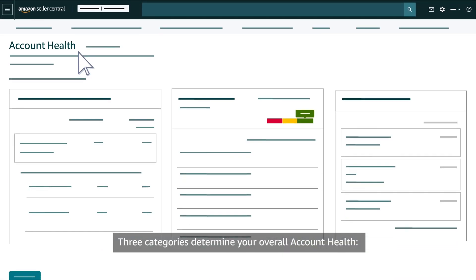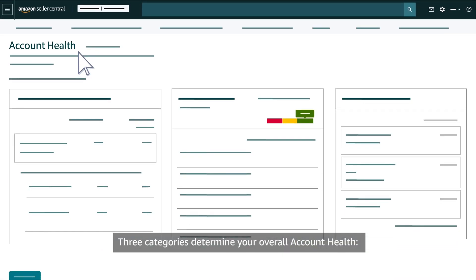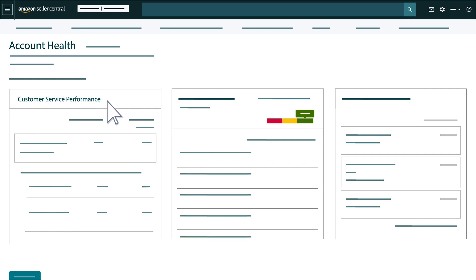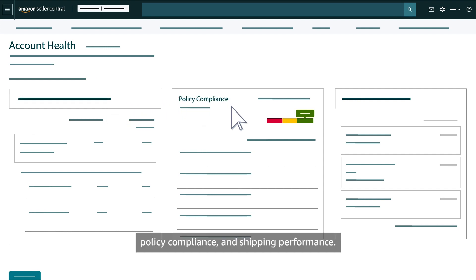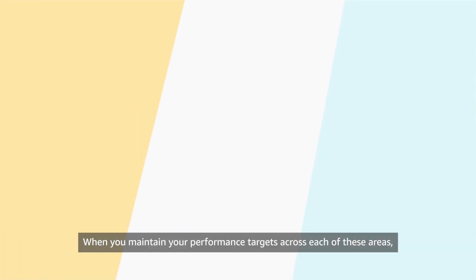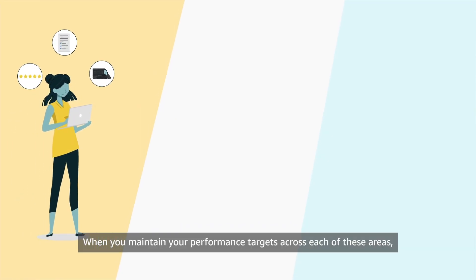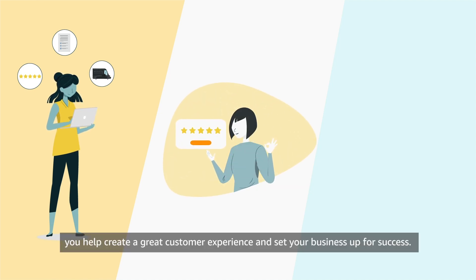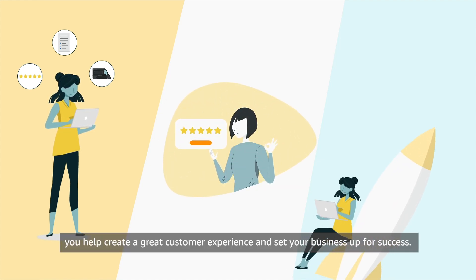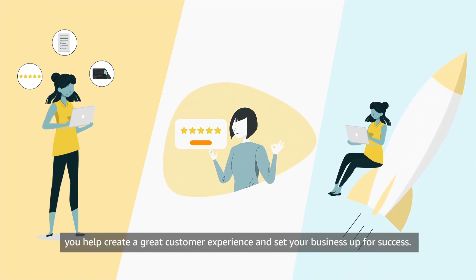Three categories determine your overall account health: Customer Service Performance, Policy Compliance, and Shipping Performance. When you maintain your performance targets across each of these areas, you help create a great customer experience and set your business up for success.